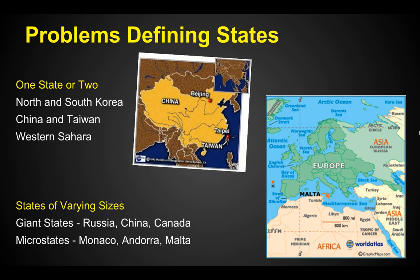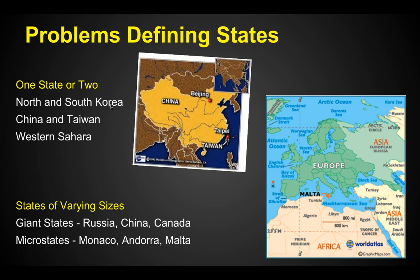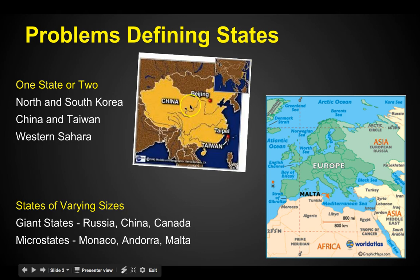Problems defining states. We try to define what countries are and where they are, but sometimes it's clear and sometimes it's a problem. For example, with North and South Korea, we think of them as one state of Korea, but since the 1950s they've been separated into two states. Yet sometimes people still claim to be simply Korean. Another issue is China and Taiwan — Taiwan claims to be independent, though some consider it still Chinese with its own independent rule. The Western Sahara is in a similar situation.